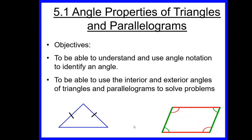This is the first in a series of lessons from chapter five, looking at angles and their properties. In this lesson, we're going to look at angle properties of triangles and parallelograms. We're going to start off by making sure we understand and use the angle notation correctly to identify the angles we want to find, and look at finding interior and exterior angles of triangles and parallelograms to solve problems.